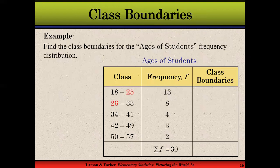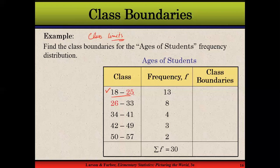Here is the problem we were working with. You can see that 18 to 25 was the first class, where 18 is the lower class limit and 25 is the upper class limit. Now, if we want to convert these limits into class boundaries, there is a difference between class limits and class boundaries. Class limits are intervals — for example, after 25 you don't have any value before 26, so there is an interval between 25 and 26, and again an interval between 33 and 34.